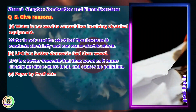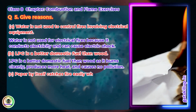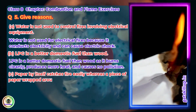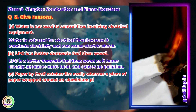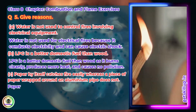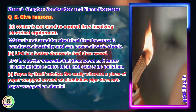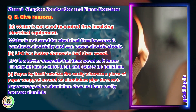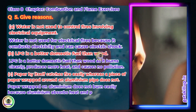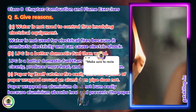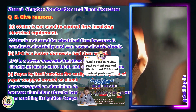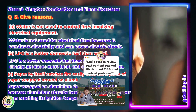Paper by itself catches fire easily, whereas a piece of paper wrapped around an aluminium pipe does not. Answer: Paper wrapped on aluminium does not burn easily because aluminium absorbs heat and prevents the paper from reaching its ignition temperature.